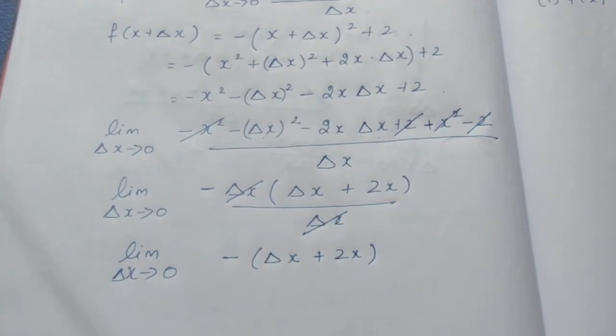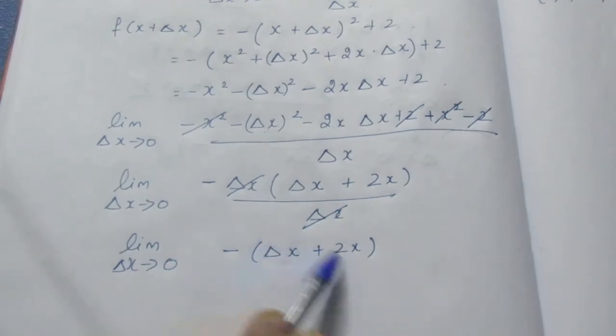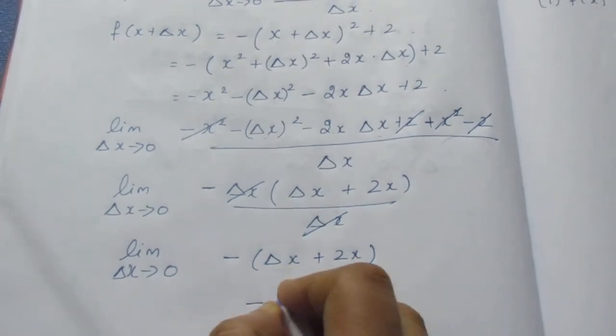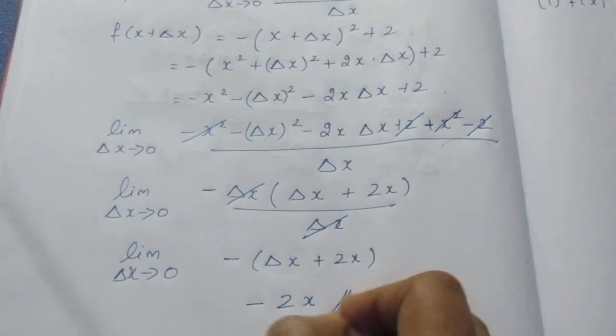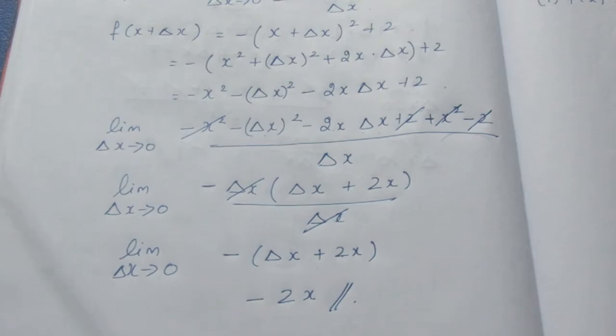Now, let's substitute limit value again. What is it? Delta x tends to 0. If we take delta x to 0, what will the answer be? Minus 2 into x. If delta x tends to 0, then x tends to 0. So, we will substitute value again.